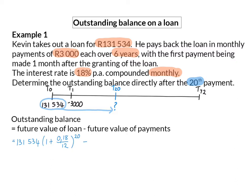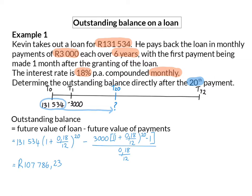For the future value of payments, we use the future value formula. The payment amount X is R3,000, and the interest rate is 18% compounded monthly for the first 20 payments, divided by that same monthly interest rate. Calculating this on your calculator gives an outstanding balance after the 20 payments of R107,786.23. So even though Kevin has paid R60,000 after 20 payments, only about R23,700 of that has gone to the capital payment of his loan.